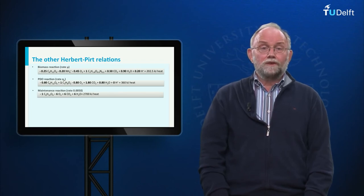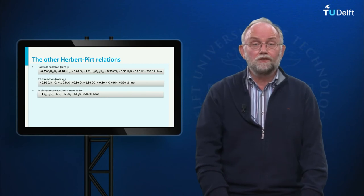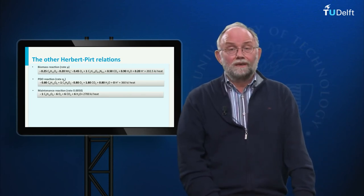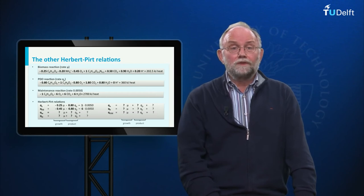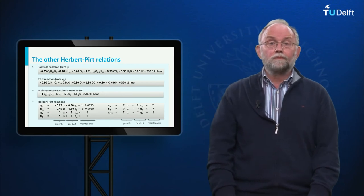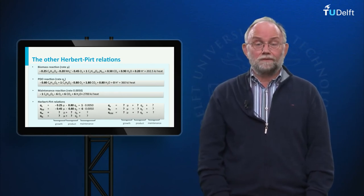Knowing the stoichiometry of these reactions, we can use the first law of thermodynamics — energy conservation — to calculate the heat produced in each reaction, as indicated on the screen. From these black box model reactions we can now formulate the total set of Herbert-Pert relations by multiplication and addition.